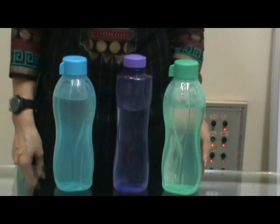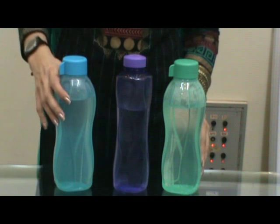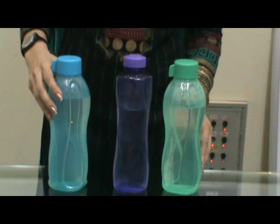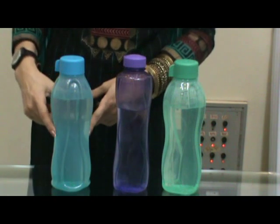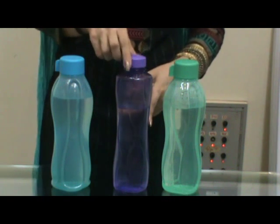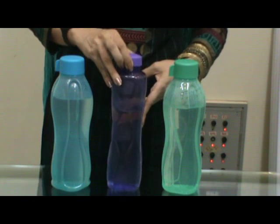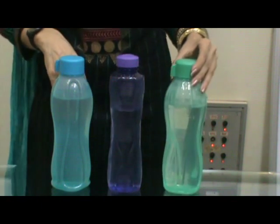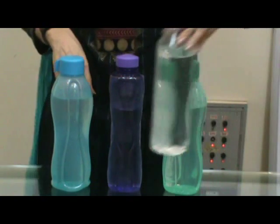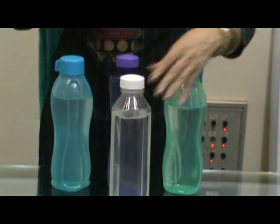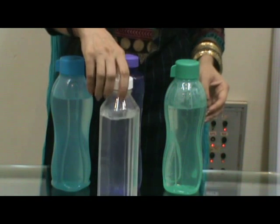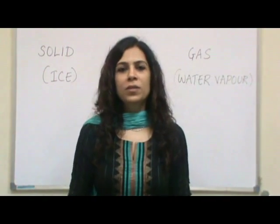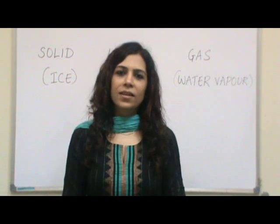As we saw, water has no color. Now, can you see this bottle? It's blue in color. And when you see water in it, the water also looks blue. In this purple bottle, it looks purple. And in this green bottle, water looks green. And have a look at this white transparent bottle — so it looks like water has no color. From all this, we conclude that water is colorless.